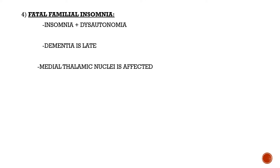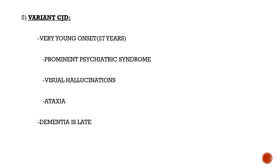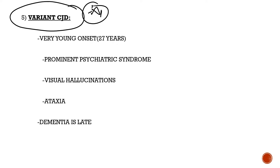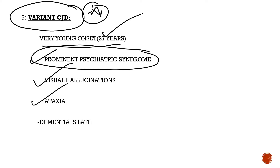Fatal familial insomnia is characterized by insomnia along with dysautonomia — predominantly increased sympathetic activity. Dementia is a late, not early, feature. The area of pathology is the medial thalamic nucleus. Variant CJD, with an average age of onset of only 27 years, differs from sporadic CJD in that dementia is not the initial feature. Instead, a prominent psychiatric syndrome — severe depression, psychosis, visual hallucinations — along with cerebellar ataxia predominates, and dementia occurs late.